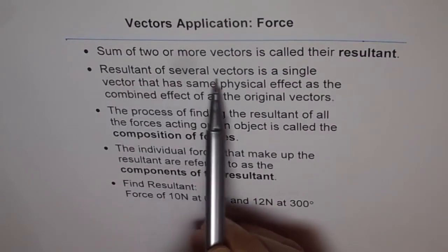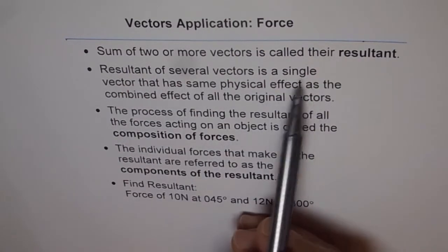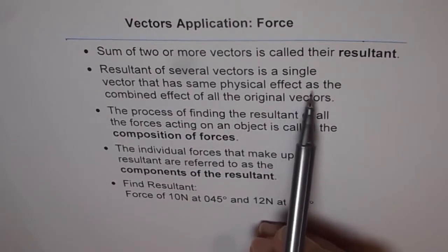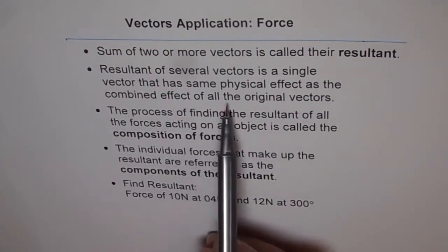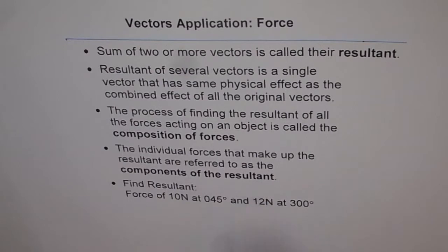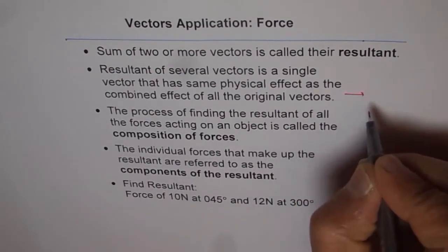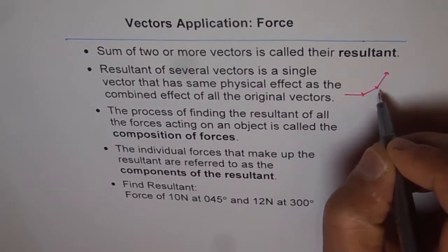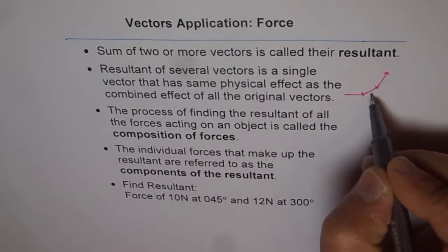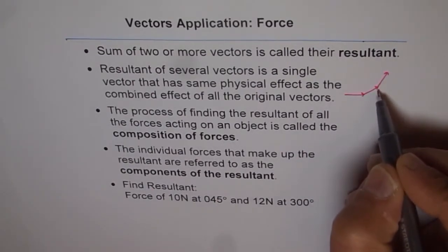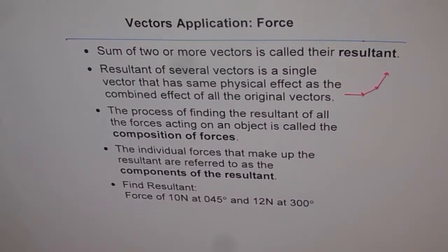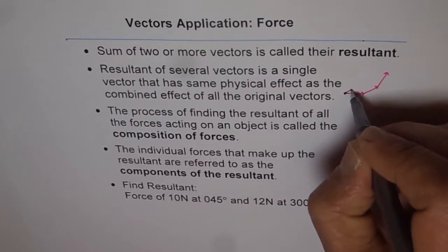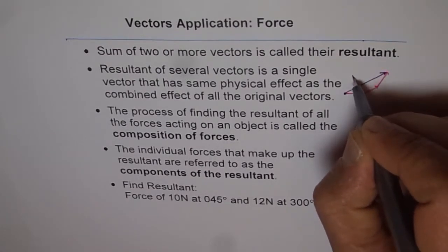The resultant of several vectors is a single vector that has the same physical effect as the combined effect of all the original vectors. For example, if I have one vector like this, the other one like this, the third one like this, and I place them tail on the head of the previous one, then joining from my first tail to the last head gives me the resultant vector, vr.